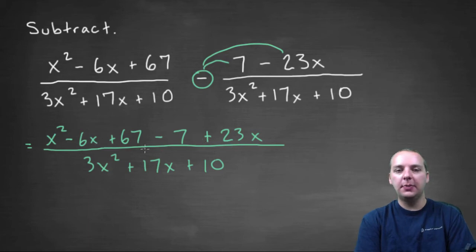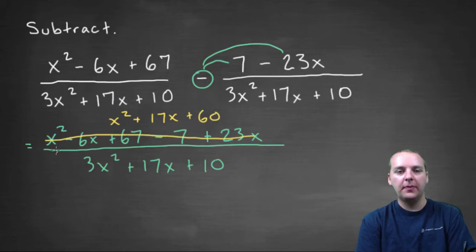Alright, let's clean this up a little bit, and just to save space, I'm going to try to squeeze it up here. I'll change colors, but we would have an x squared. For the x's, minus 6 and plus 23, that would give us 17x. And then 67 minus 7 would be 60. So I'll mark this guy out.